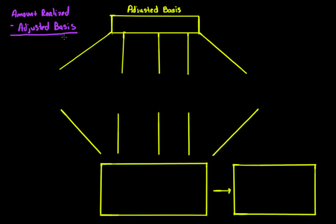Now in a previous video I defined what exactly amount realized is. In this video, we're going to talk about what adjusted basis is. The general adjusted basis rule is defined in the Internal Revenue Code. It says that adjusted basis — which I'll abbreviate AB — starts with the unadjusted basis determined throughout the Internal Revenue Code, and then you make certain adjustments to arrive at adjusted basis.